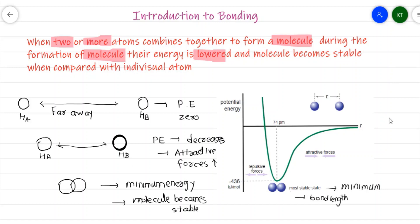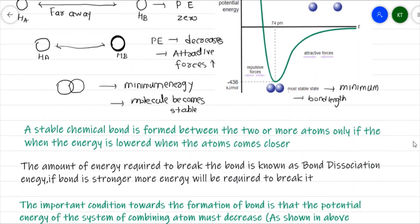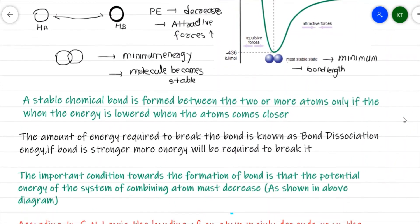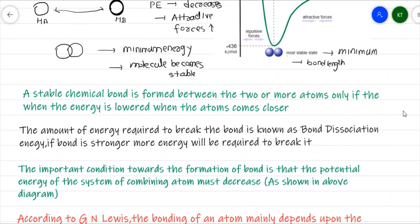Generally, a stable bond is formed when two or more atoms combine and the energy of the system gets lower. When atoms are closer with each other, the energy of the system gets lower and stable chemical bond formation takes place.